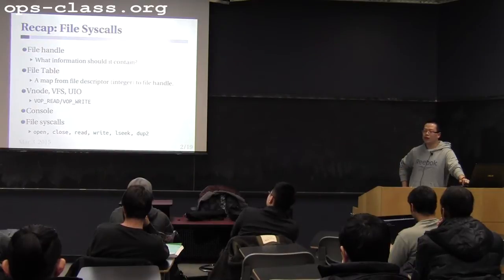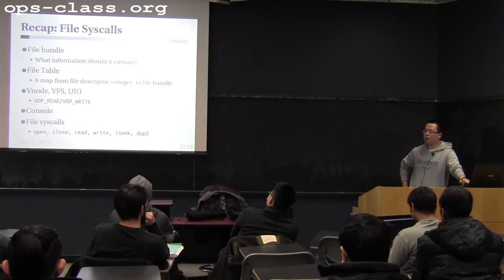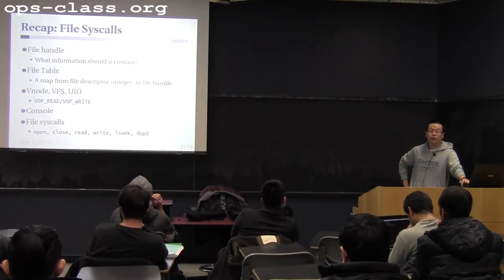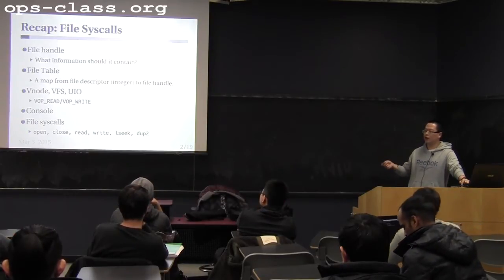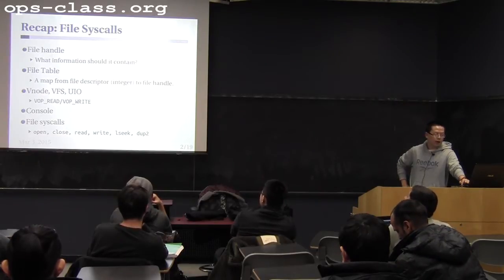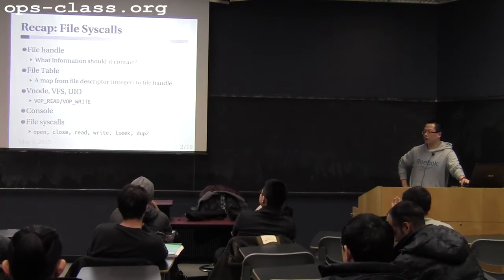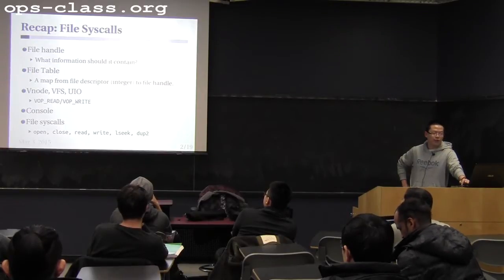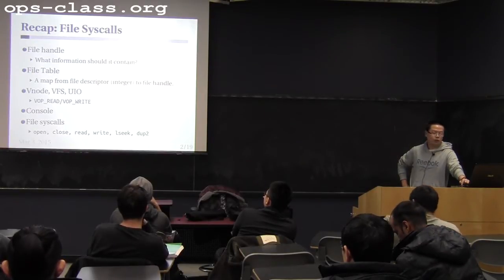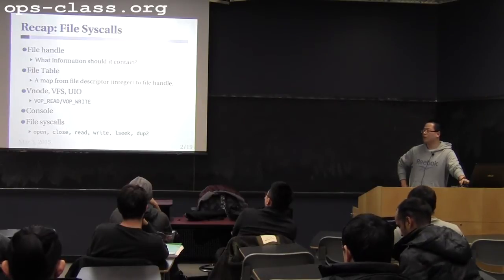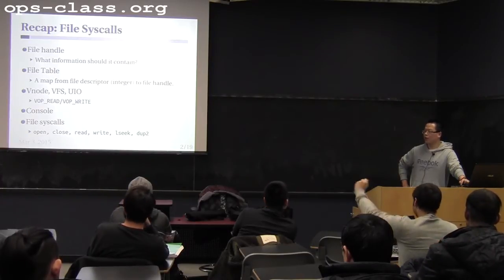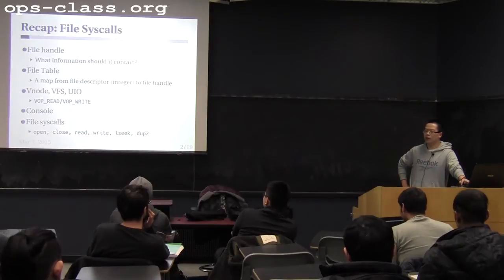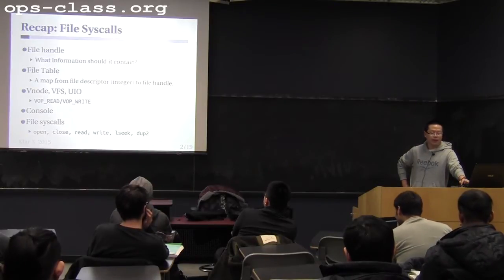And what else? The VNode pointer to point to the actual file, and also the lock that protects access to this file handle. So that's the file handle design. We also talked about the file table design. The file table is basically just a map between the file descriptor, which is an integer, to the file handle. You can choose whatever data structure can meet the requirements: given a file descriptor, get a file handle, or find an available file descriptor.